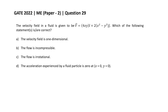Hello everyone. In this video we will solve Gate 2022 MA Set 2, Question Number 29. The question is: the velocity field in a fluid is given by vector V = 4xy î + (2x² - y²) ĵ. Which of the following statements is or are correct? Option A: the velocity field is one-dimensional. Option B: the flow is incompressible. Option C: the flow is irrotational. Option D: the acceleration experienced by the fluid particle is 0 at x=0 and y=0.